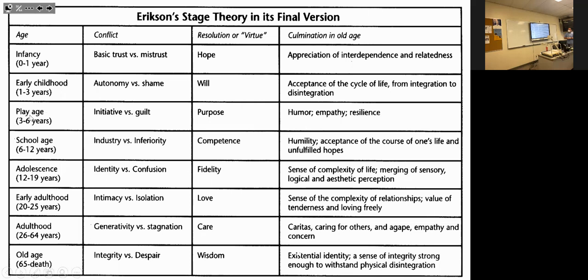Then we have adulthood, roughly 26 to 64 years old: generativity versus stagnation. People on the generativity side are willing to give back and help others — the virtue is care. Stagnation is somebody who serves only themselves, not looking out for others. The positive outcome is volunteering and caring for others.